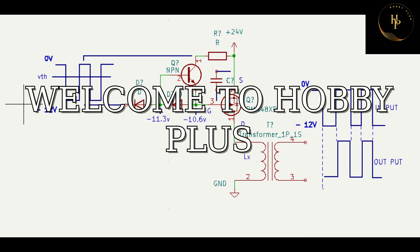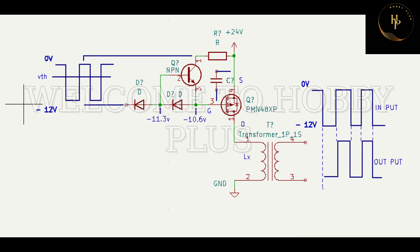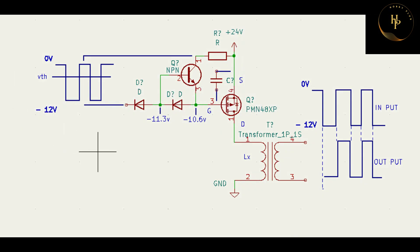Hi friends, again we meet with a new circuit. Look at this circuit, it is a switching circuit with P-channel MOSFET. It is the output curve and it is input curve, which type of pulse comes here and output gives some pulse like this.